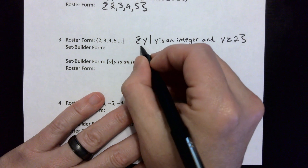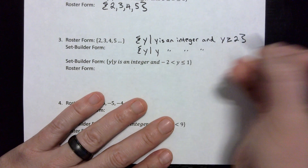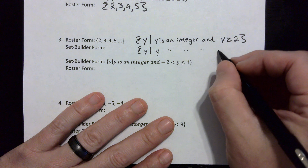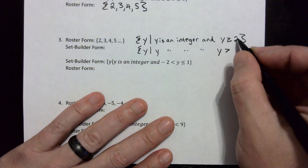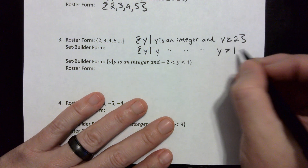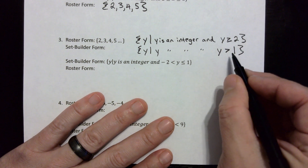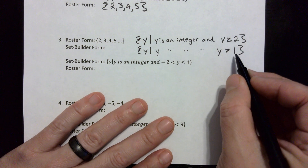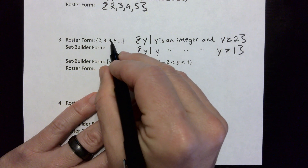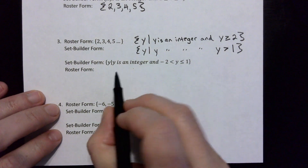The other way of writing this is y such that y is an integer and y is greater than one — we can't use two here since we're using strict inequality, so we go to one. This is not including the one, so the next integer greater than one is two, then three, four, five, and so on.